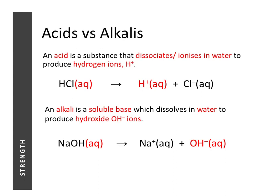An acid is a substance that dissociates or ionizes in water to produce hydrogen ions. That's the key ion that gives acids their characteristics. In contrast, an alkali dissolves in water to produce hydroxide ions, which is the ion that gives alkalis their characteristic properties.